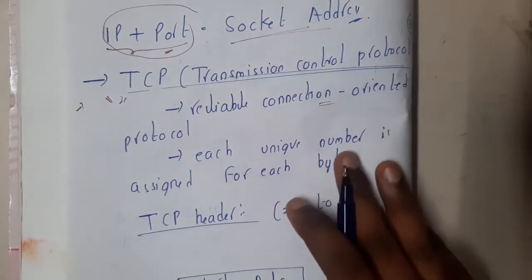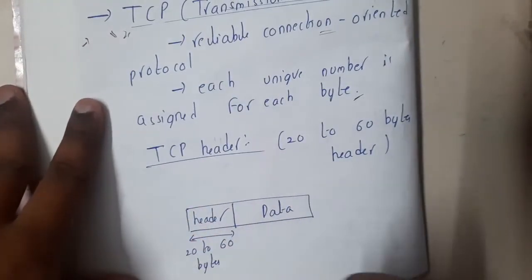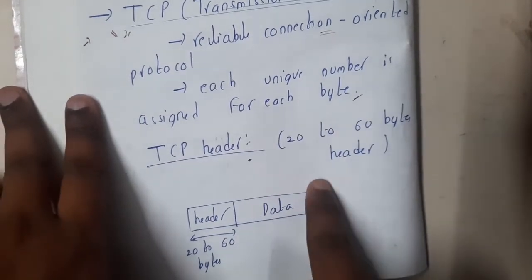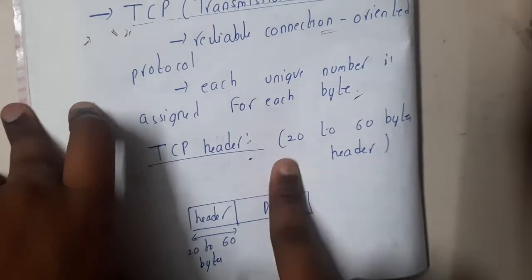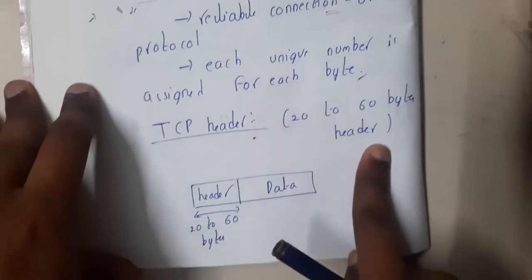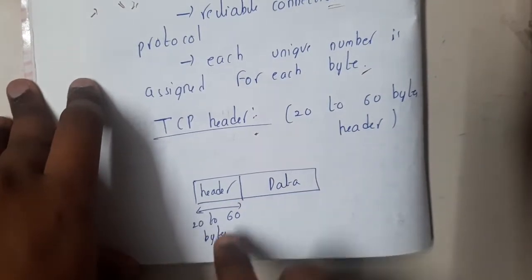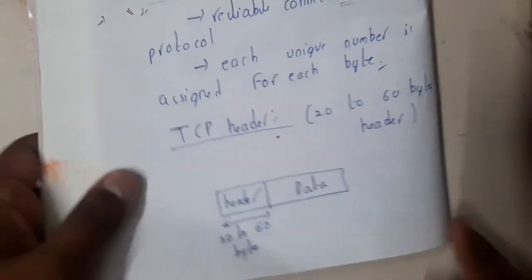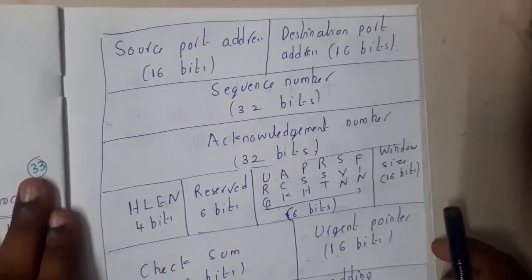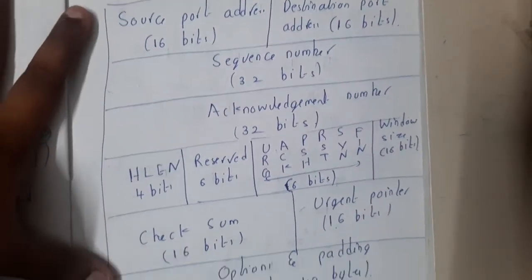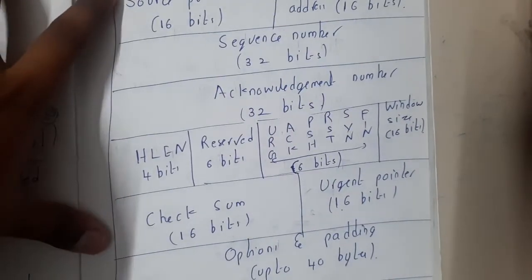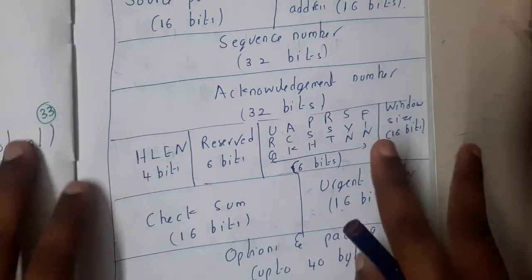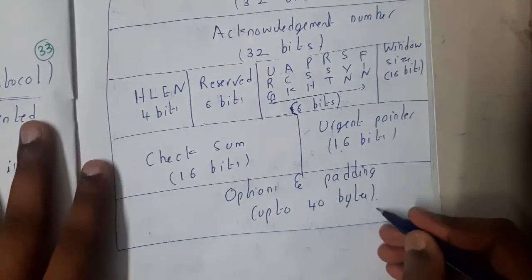Now let us go through the TCP header. The TCP header is similar to the IP header — if you recall, the IP header was also 20 to 60 bytes; similarly, the TCP header is also 20 to 60 bytes. The header part is 20 to 60 bytes, followed by the data part. There is no trailer — only in the data link layer do we have a trailer. The structure has five rows, each of 32 bits, covering 20 bytes, with the remaining 40 bytes for options.